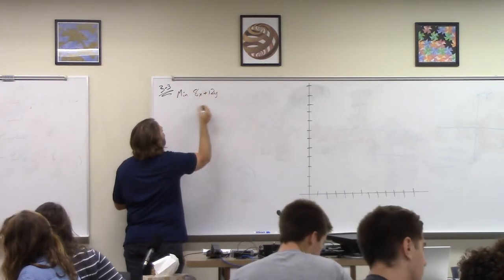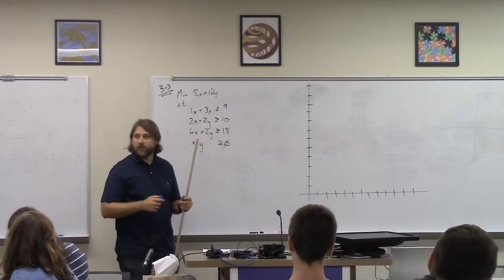So I need someone to help me out and remind me what the model is that we're trying to optimize for problem three. The objective is to minimize 8x plus 12y, subject to x plus 3y greater than or equal to 9, 2x plus 2y greater than or equal to 10, 6x plus 2y greater than or equal to 18, with non-negativity constraints.